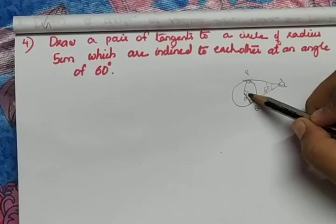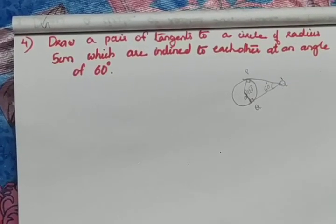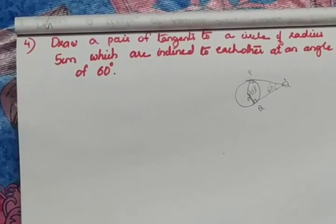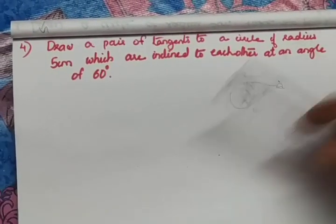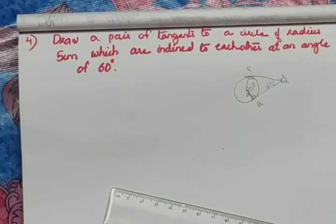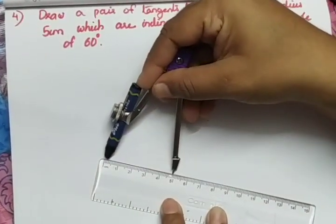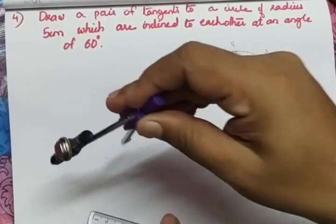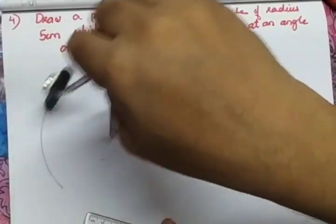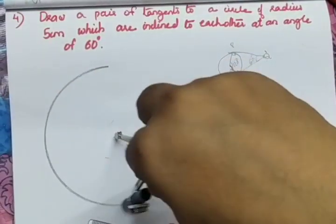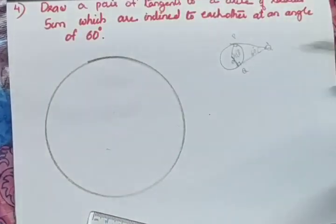With the help of this angle 120 degree, we are going to draw the tangent. So, what we have to do first is, draw a circle of radius 5 cm. I am going to draw a circle with the help of the scale, measure the radius and draw the circle.